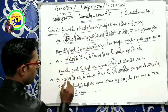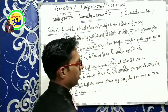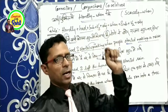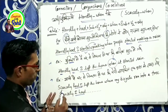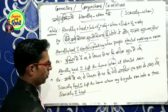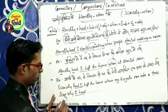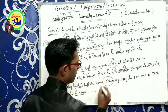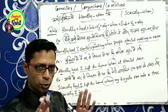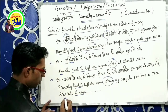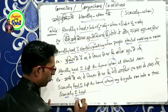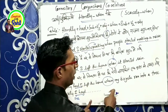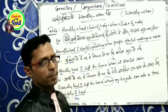'अभी मैं घर से निकला ही था कि मेरी cycle एक पेड़ से टकरा गई।' इसे Scarcely से बनाया है: 'Scarcely had I left the home when my bicycle ran into a tree.' Scarcely के साथ एक छूट है — आप subject को had से पहले भी रख सकते हैं: 'Scarcely I had left the home when my bicycle ran into a tree।' Hardly के साथ यह flexibility नहीं है।